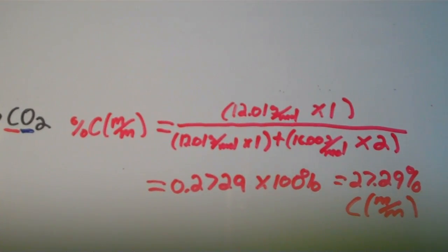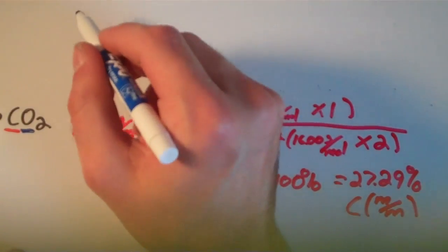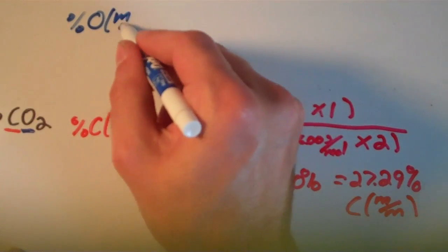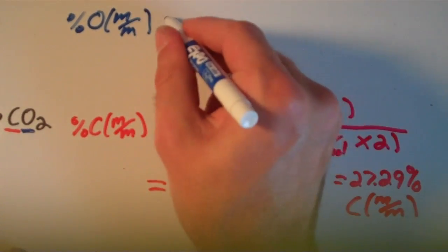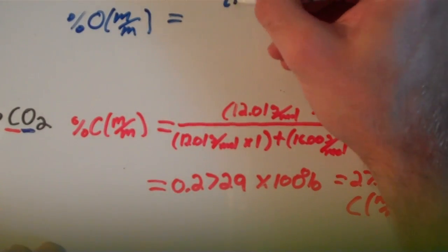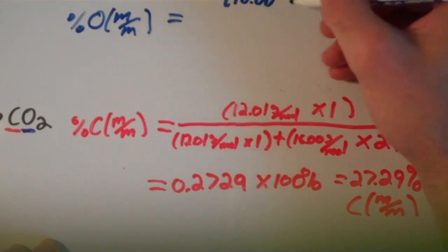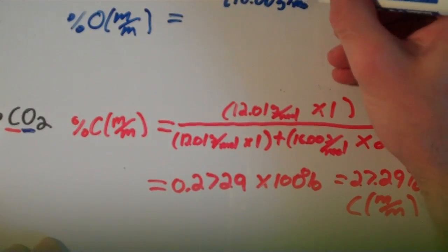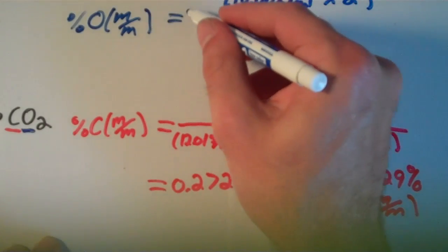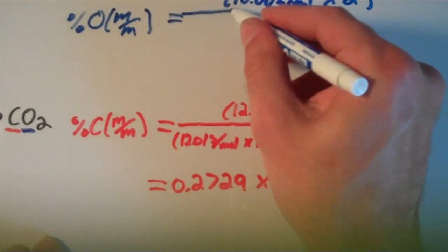To calculate the mass percent composition of oxygen in CO2, in our numerator we get the mass of oxygen that's in one mole of this compound. So our numerator is going to be 16.00 grams per mole times two, because there are two oxygen atoms in CO2.